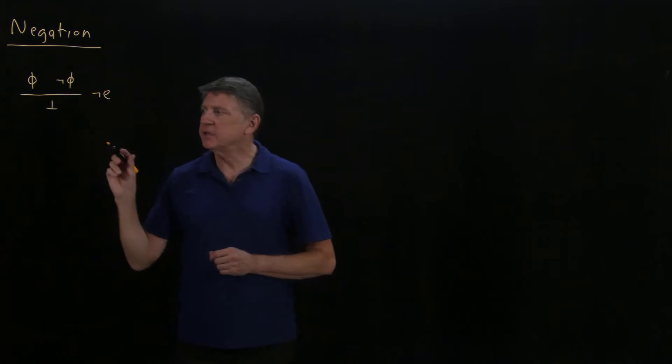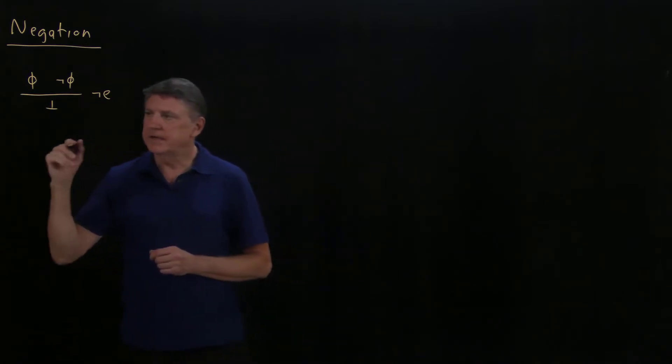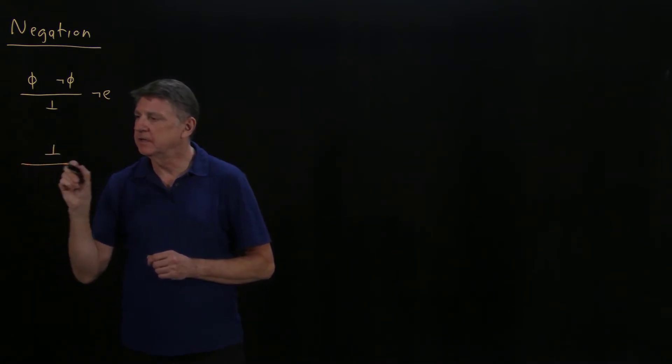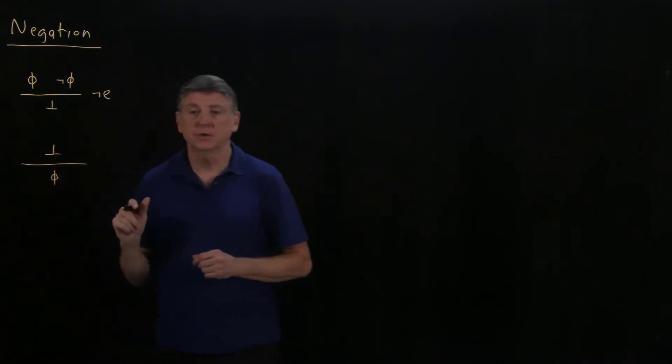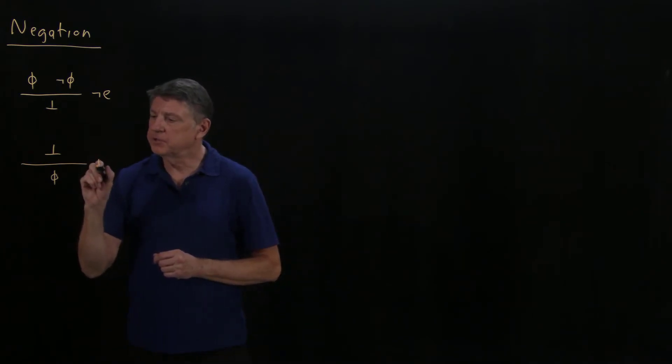It has a closely allied rule that is whenever you see the bottom symbol in natural deduction, you can conclude any formula that you want, and that is referred to as bottom elimination.